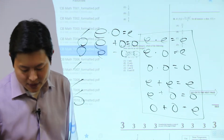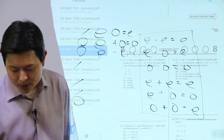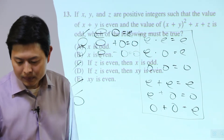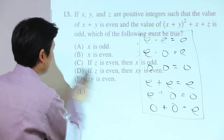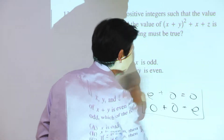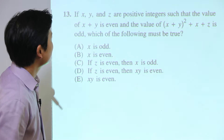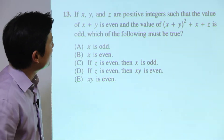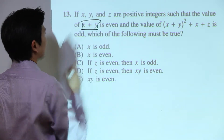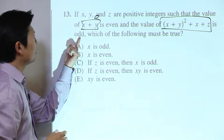Moving on to the next problem: test five, section eight, number thirteen. The question states that x, y, and z are positive integers such that the value of x plus y is even, and the value of a more complex expression is odd.